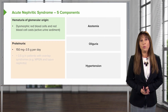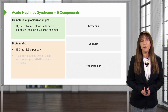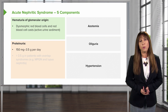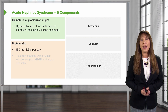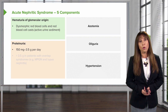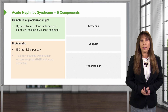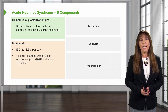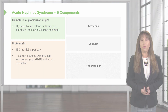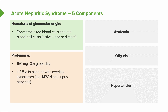We also see proteinuria in our nephritic patients, and that proteinuria is usually between 150 milligrams to 3.5 grams per day — what we would term sub-nephrotic. Some patients can have greater than 3.5 grams of proteinuria even with nephritic syndrome; these are typically patients who have overlap syndromes, including membranoproliferative glomerulonephritis and lupus nephritis, which we're going to be talking about today.